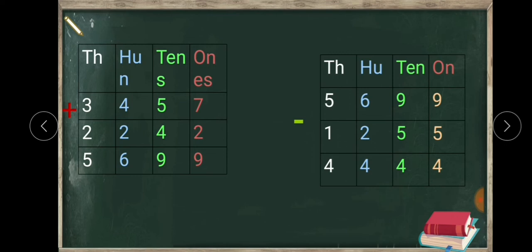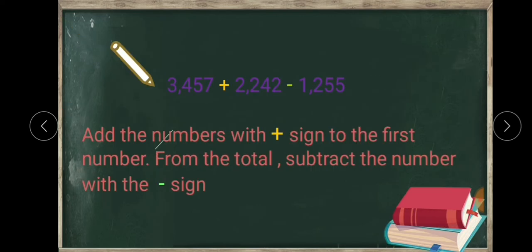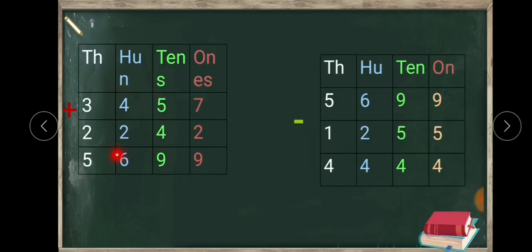The given question is three thousand four hundred and fifty seven, plus two thousand two hundred and forty two, minus one thousand two hundred and fifty five. As per the rule, first we add three thousand four hundred and fifty seven and two thousand two hundred and forty two. Seven plus two is nine, five plus four is nine, four plus two is six, three plus two is five — giving us five thousand six hundred and ninety nine.